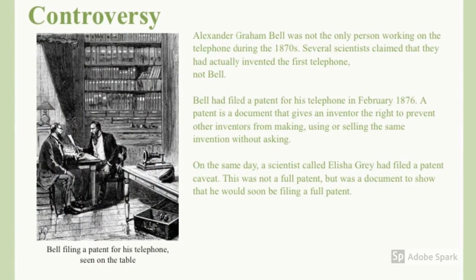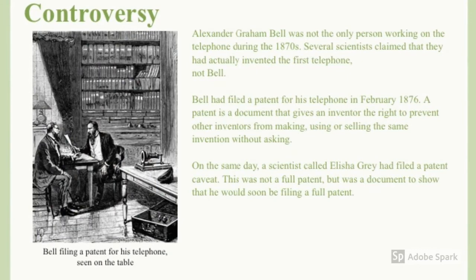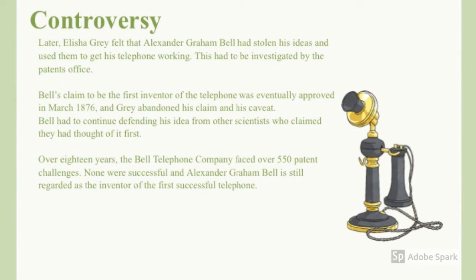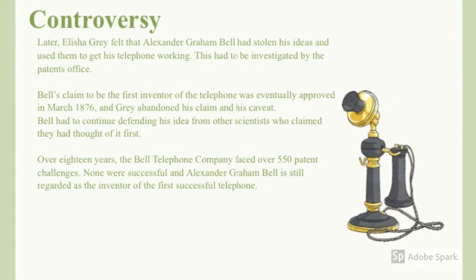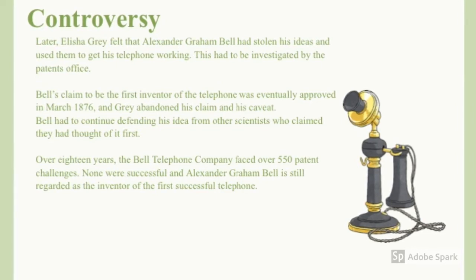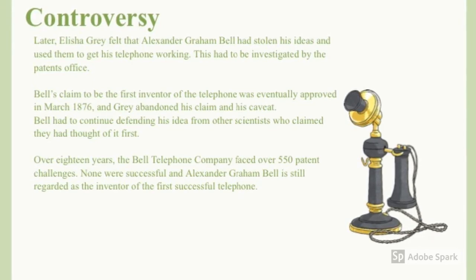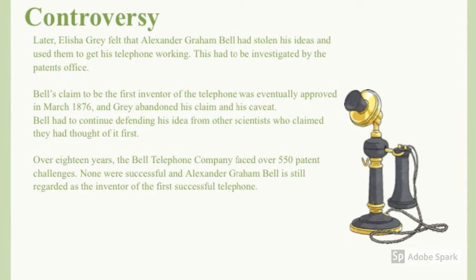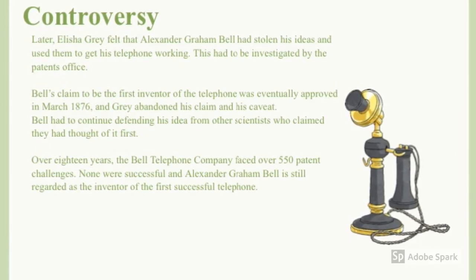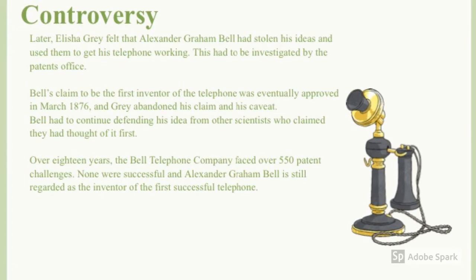However, there was controversy. Alexander Graham Bell was not the only person working on the telephone during the 1870s. Several scientists claimed that they had actually invented the first telephone and not Bell. Elisha Gray felt that Alexander Graham Bell had stolen his ideas and used them to get his telephone working. This had to be investigated by patent officers. Bell's claim to be the first inventor of the telephone was eventually approved in March 1876. Over 18 years, the Bell Telephone Company faced over 550 patent challenges. None were successful, and Alexander Graham Bell still is regarded as the inventor of the first successful telephone.